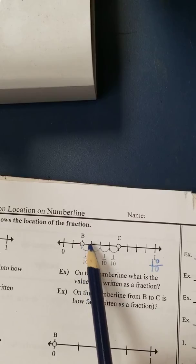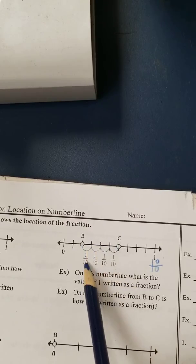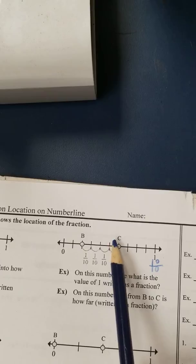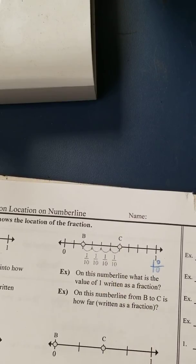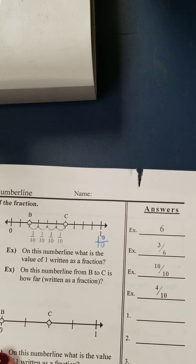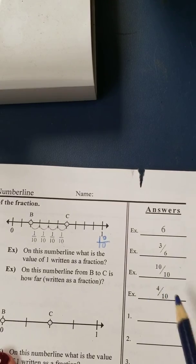So if B is here and we count the number of pieces across, we have 1, 2, 3, 4 segments. We know that our denominator is going to be 10. And because we counted four pieces, we're going to write 4 over 10.